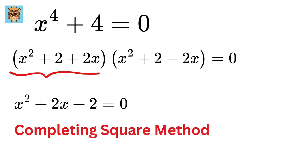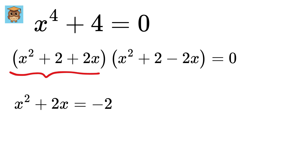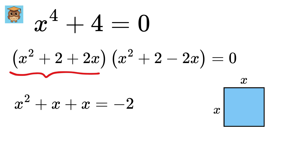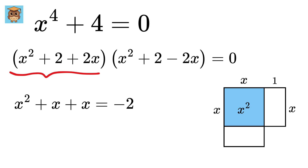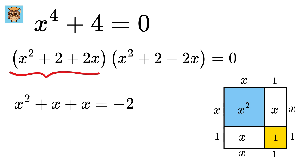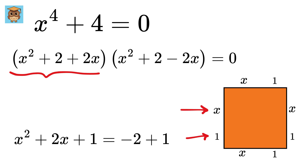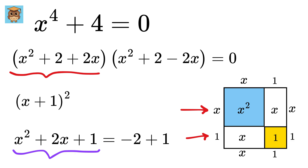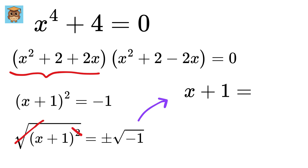Let us solve the first one using the completing the square method. Put the 2 on the right side to make it negative 2. Now write 2x as x + x. Make a square of side x — its area will be x². Now make a rectangle of side 1 and x, and similarly another rectangle of side 1 and x, such that the sum of both these is 2x. In order to make a bigger square, we just need to add a square of side 1, with area 1. So add 1 on both sides. This bigger square has side length x + 1, giving (x + 1)² = −1. Taking the square root on both sides, x + 1 = ±√(−1) = ±i, so x = −1 ± i.